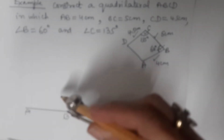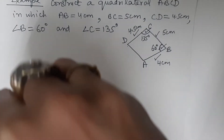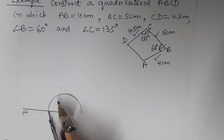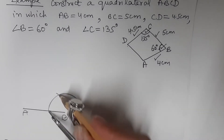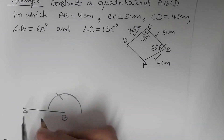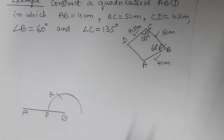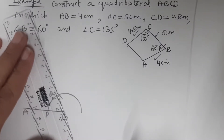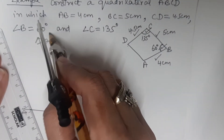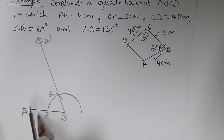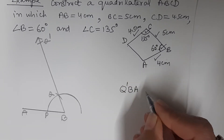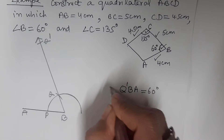At B we have to construct an angle of 60 degrees. With B as center we draw an arc, then from there we cut another arc — this is how we get an angle of 60 degrees. We mark this point as P and this as Q. When we join BQ and extend it to Q dash, angle Q dash BA is 60 degrees.